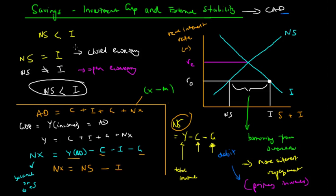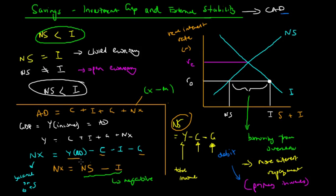Using this formula, when national savings is less than investment — as per the savings-investment gap — net exports is necessarily a negative number. As a working example: if national savings is $100 and investment is $120, then NX = 100 − 120 = −$20. A negative net exports figure means we are importing more than we are exporting.